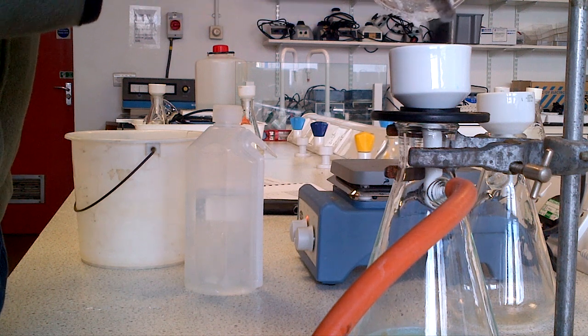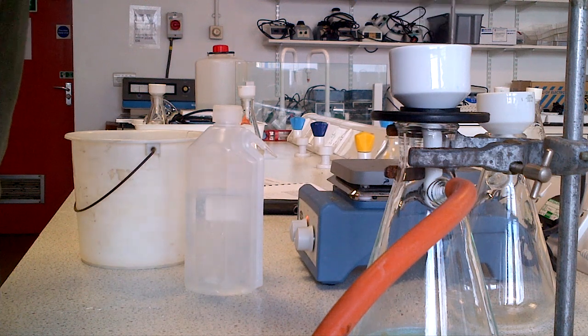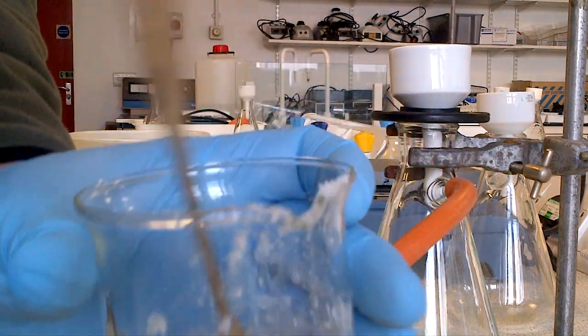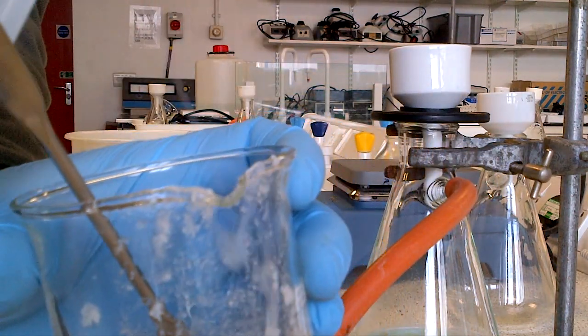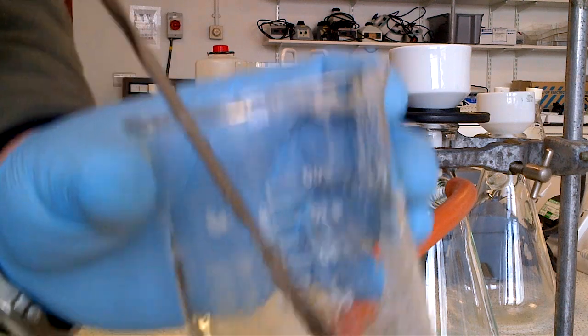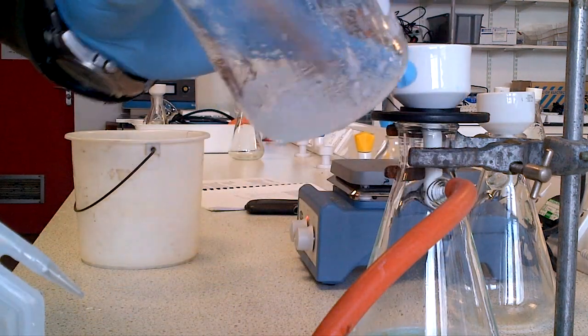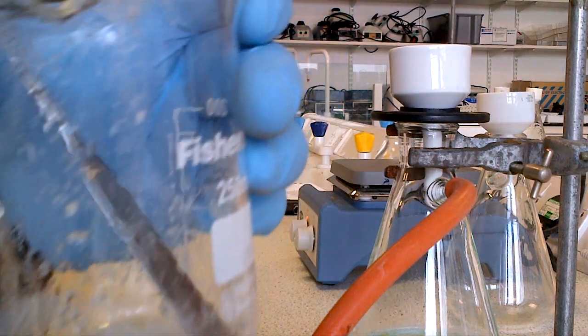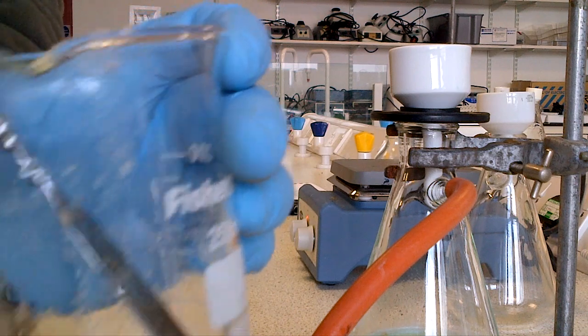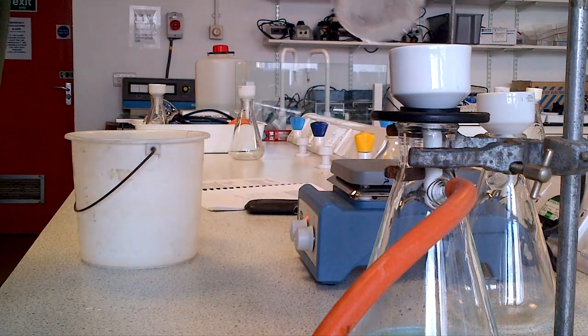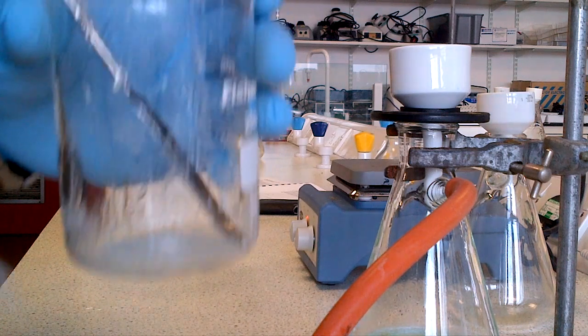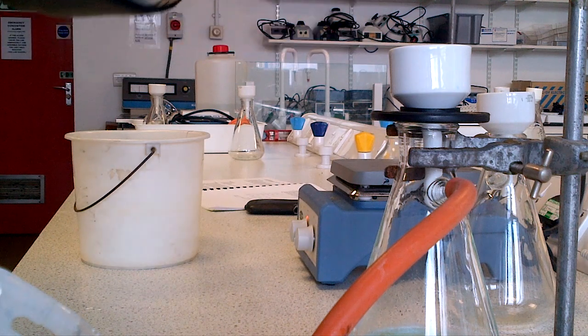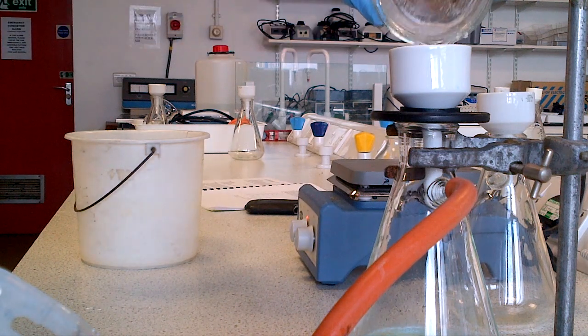Once we've done that, we now start to wash with cool solvent. I try to wash the beaker with quantities of cool solvent, maybe one mil to two mil at a time, to transfer as much of the salicylic acid over into the Buchner funnel. We wash once, twice, maybe three times.